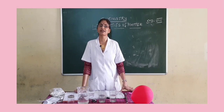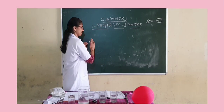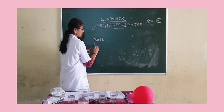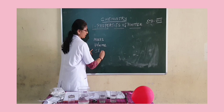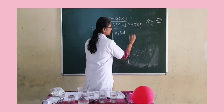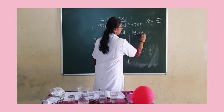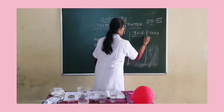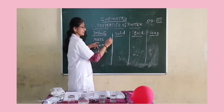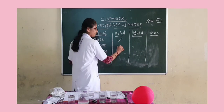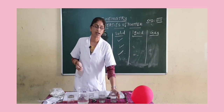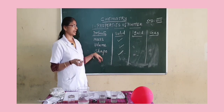The properties related to the three states of matter are: mass, volume, and shape. Let us go through these properties for each state. Solid has definite mass. Solid has definite volume. Solid has a permanent, definite shape.